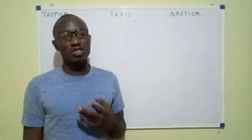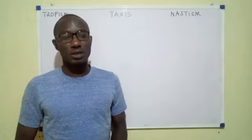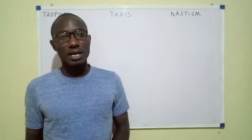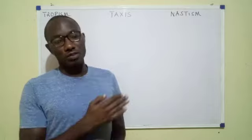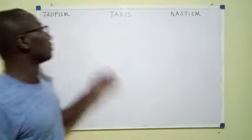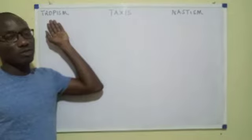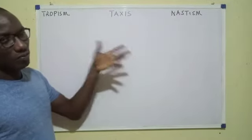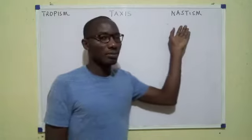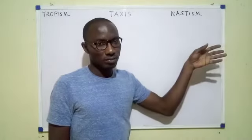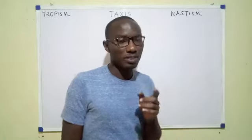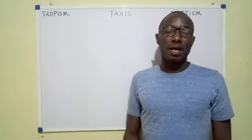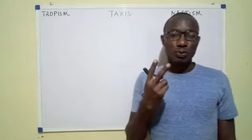These are three types of responses that we see in organisms. Organisms usually respond to stimuli in one of these three ways. Tropism is also referred to as tropic response, taxis as tactic response, and nastism as nastic response. How do we know if a particular response is tropic, tactic, or nastic? I'll differentiate them on two legs — two different criteria or parameters.